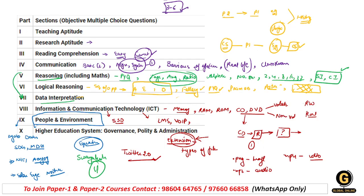Swayam ke four quadrants puche gaye the. Swayam Prabha mein kitne total number of channels hote hain yeh puche gaye the. Swayam Prabha mein match the following type ka question pucha gaya tha. Higher education mein ek question tha - 1902 mein pehla engineering college kaun sa bana tha - usme students kaafi confused ho gaye the. People Development and Environment se ozone layer ki motaai kitni hai - yeh pucha gaya tha. Jaldi se mujhe comment karke bataaiye iska answer.